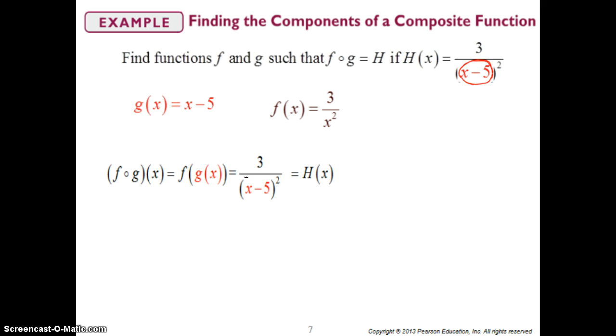Another way to look at this, which would also be just as correct, is what if you called g of x x minus 5 squared? If you called g of x x minus 5 squared, what would your f of x be? f of x would have to be 3 over x instead of 3 over x squared. And do you see that if you have these two functions, if you plug...